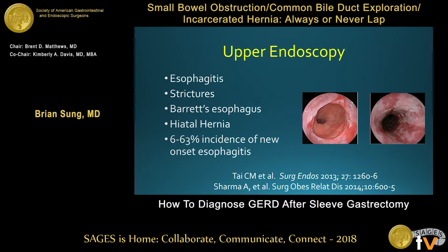Another modality in our armamentarium for diagnosing reflux is upper endoscopy, which is not only diagnostic but also therapeutic. Things we're looking for include esophagitis, strictures, Barrett's esophagus, and hiatal hernia — we're hearing that 15% are identified after sleeve. Within the literature, there's a 6% to 63% incidence of de novo esophagitis after sleeve gastrectomy.